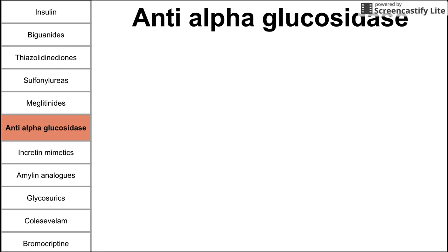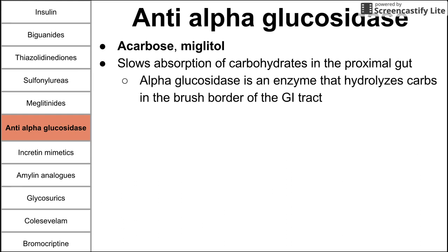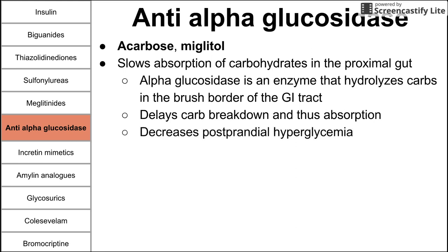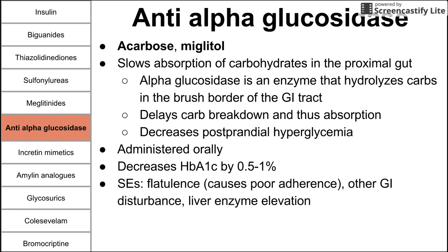Next are the anti-alpha-glucosidases. The two drugs are acarbose and miglitol. Their mechanism is to slow absorption of carbohydrates in the proximal gut. Alpha-glucosidase is an enzyme that hydrolyzes carbohydrates in the brush border of the gut, so inhibiting it delays carb breakdown and absorption, and decreases postprandial hyperglycemic spikes. These are administered orally and decrease HbA1c by a modest 0.5 to 1%. A major downside is severe flatulence and GI disturbances, since unabsorbed glucose feeds gut bacteria. They also cause poor adherence and are expensive.